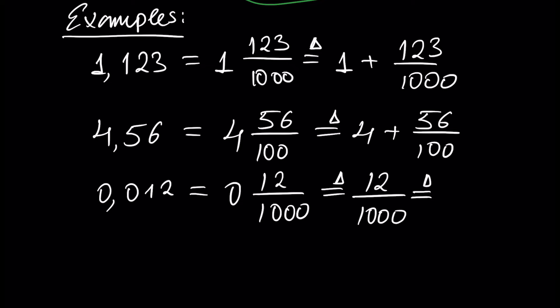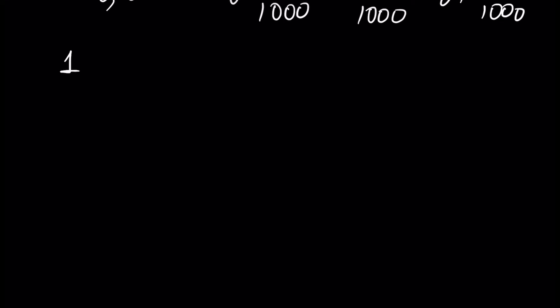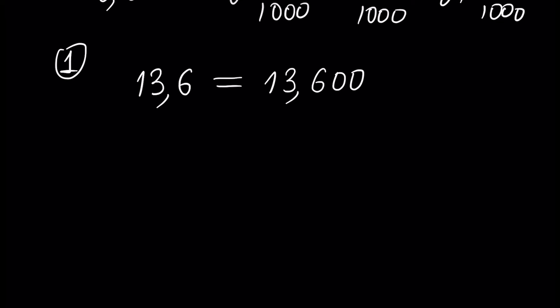Zero and 12 over 1000 by definition is equal to zero plus 12 over 1000, which simplifies to just 12 over 1000. So now we can write any decimal fraction as a fraction, or in general form as a mixed number with a whole part and fractional part. Let's talk about the properties of decimal fractions. The first property: adding zeros to the right side of a decimal fraction doesn't change its value.